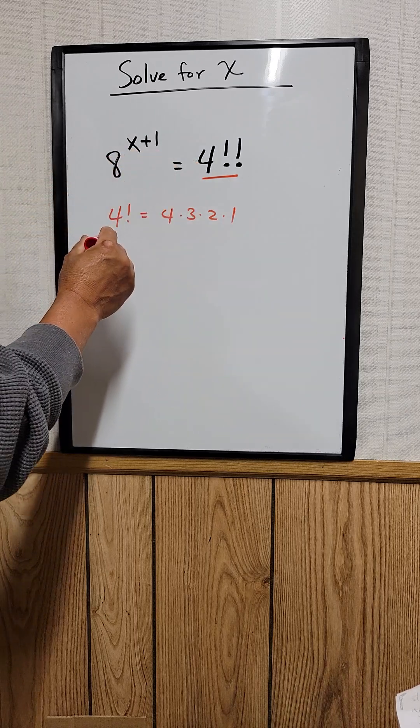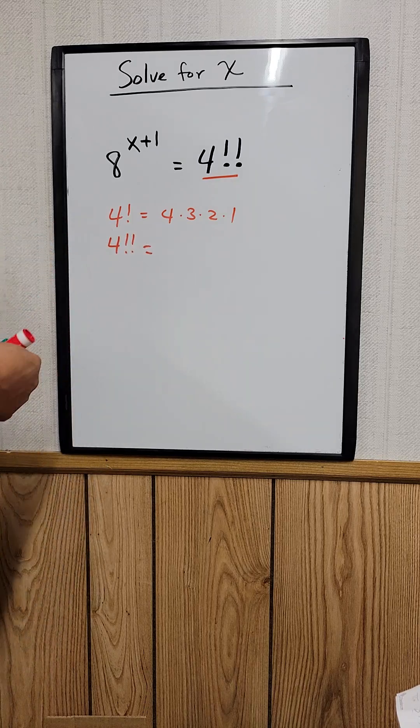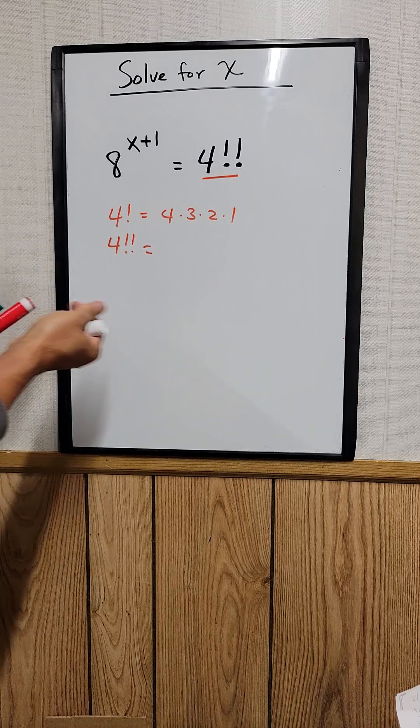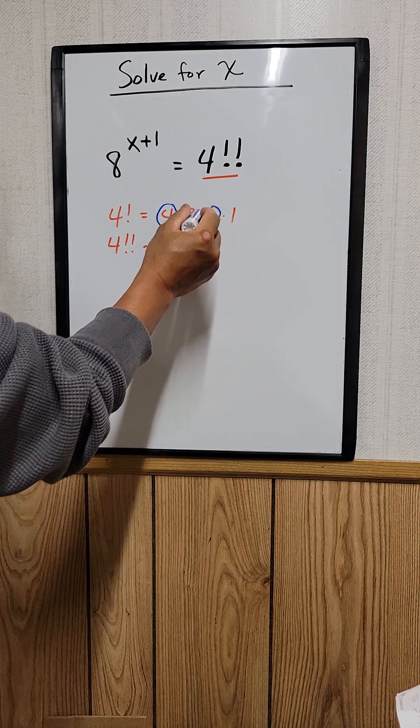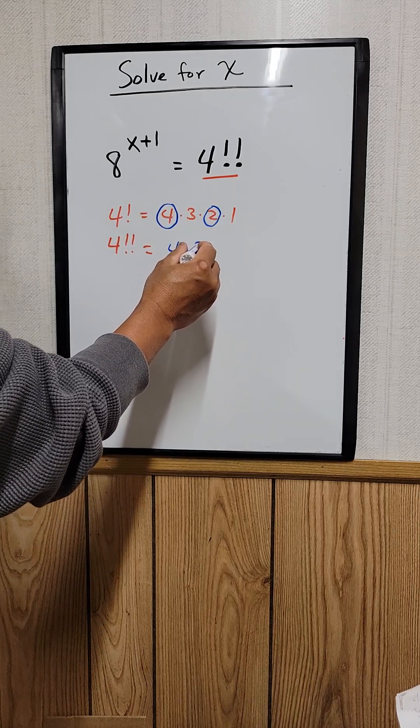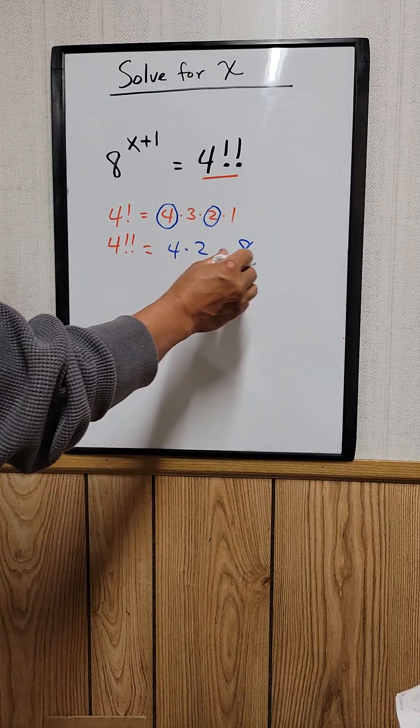So 4 double factorial means we just want to take all the even numbers and multiply them together. It will be 4 times 2, which equals 8. So 4 double factorial is just equal to 8.